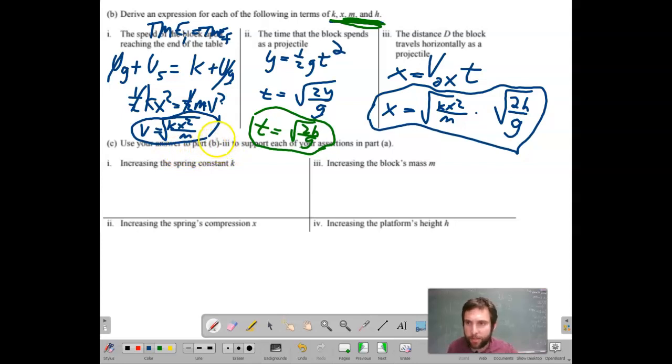If we increase the spring constant, what's going to happen to the distance? Well, look. If we increase the spring constant, it's in the numerator. k is in the numerator. So if we increase k, what happens to our velocity? Bigger k, bigger velocity, bigger displacement.